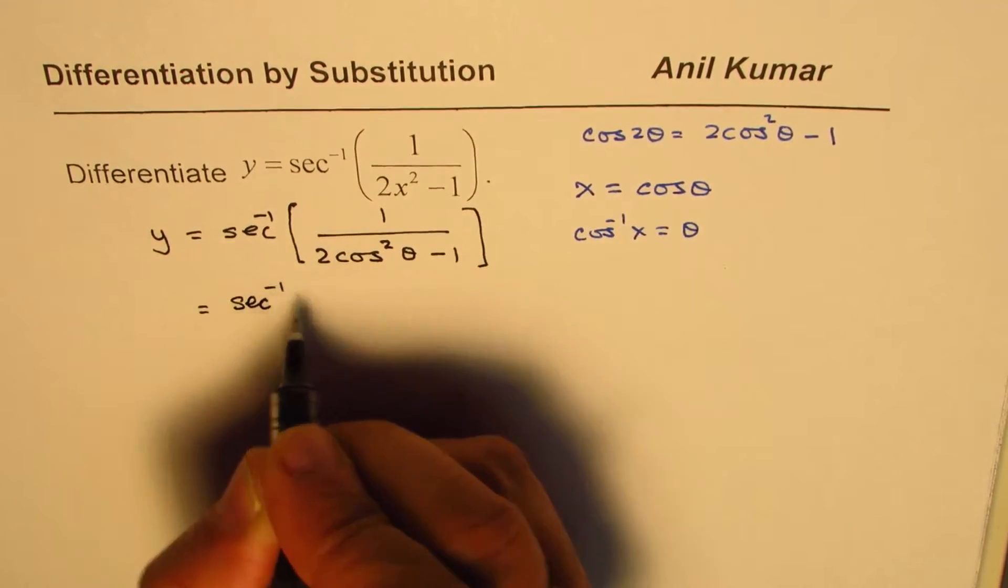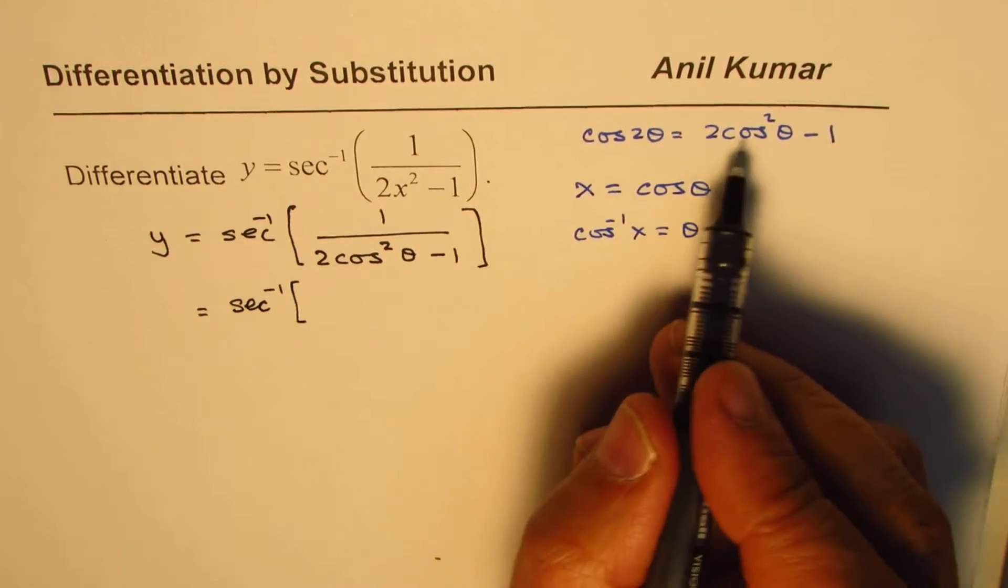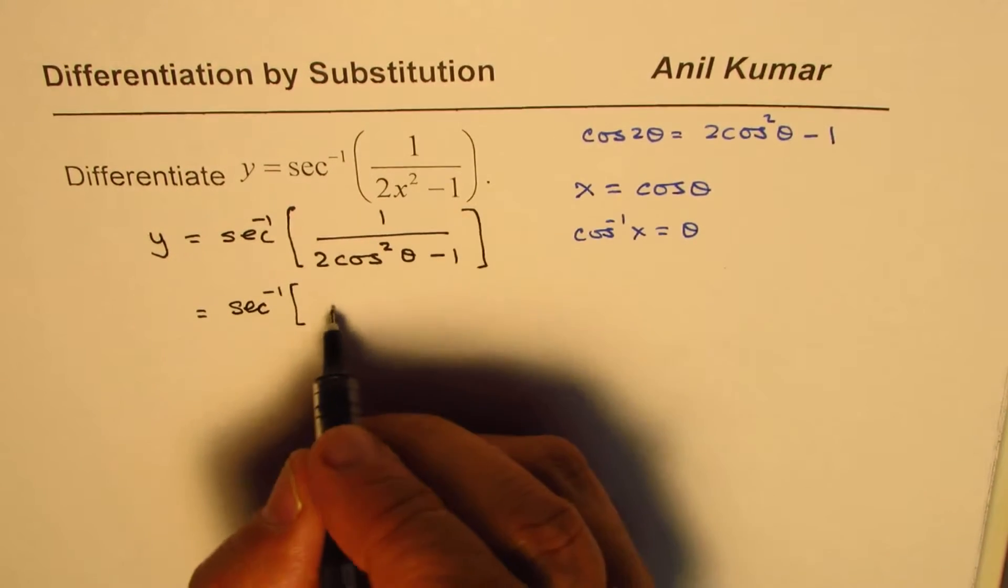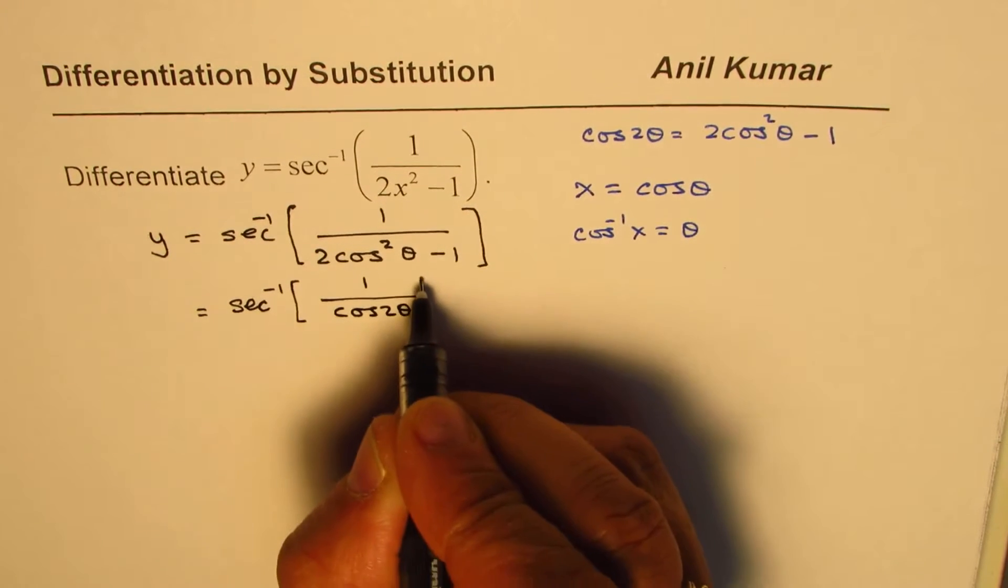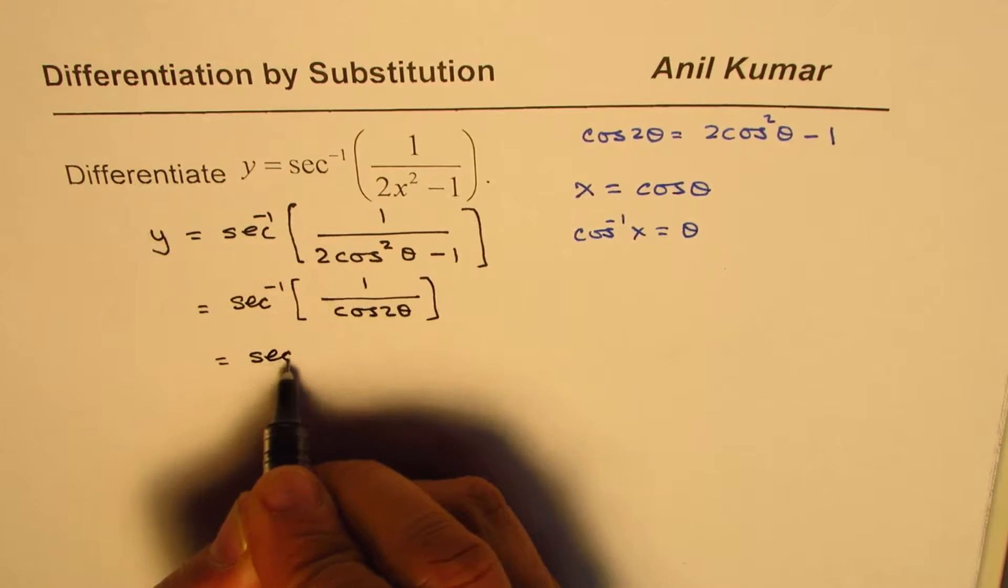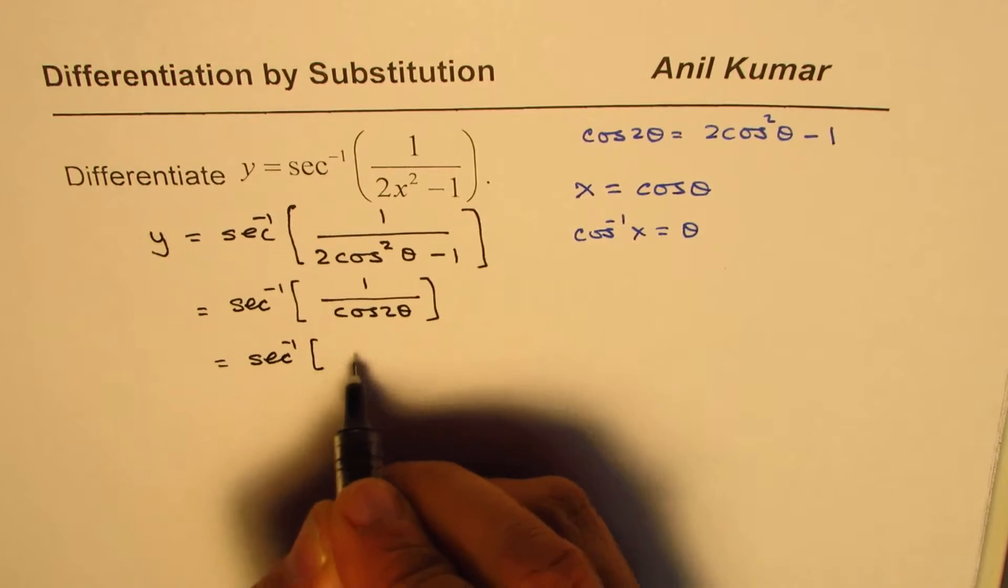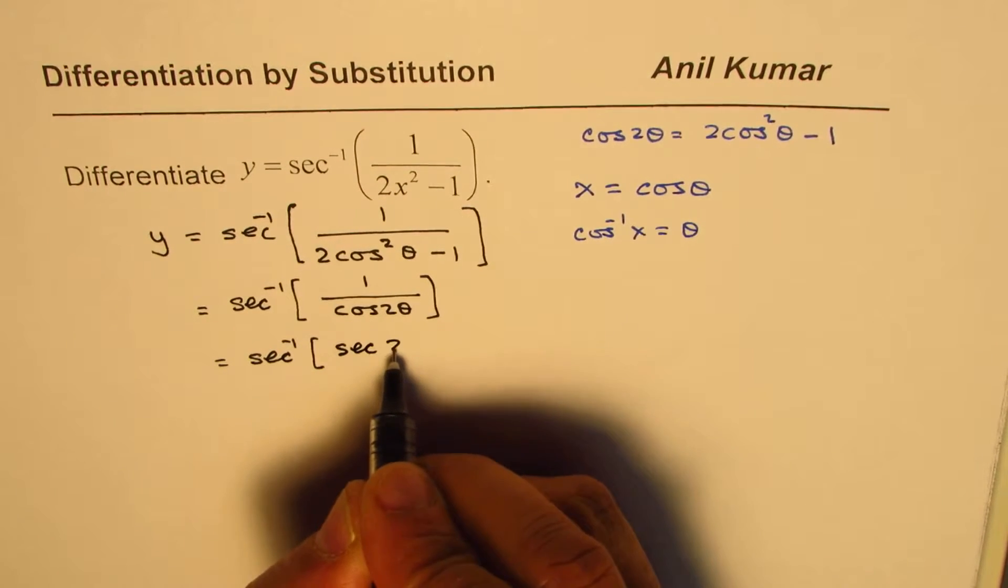That gives us secant inverse and 2 cos square theta minus 1 is cos 2 theta. So, it would be 1 over cos 2 theta. So, that is secant inverse, secant 2 theta.